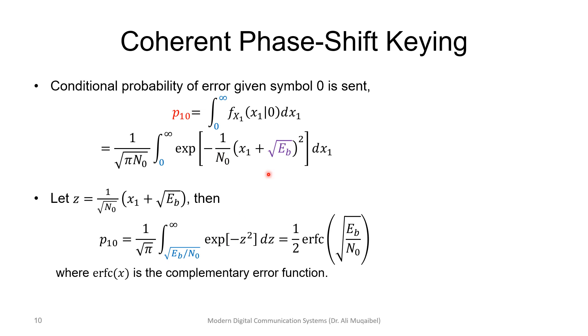to go from here to here, we change the variable, we change the differential, and we change the limit. I think we have done this a couple of times, so this is why we're just doing it a bit quick. This integration can be written in terms of error complementary function, and this is the definition of error complementary function, and we can write the probability of error for the case of P10, which means sending 0 but getting 1 is given by the following expression. That's this probability.